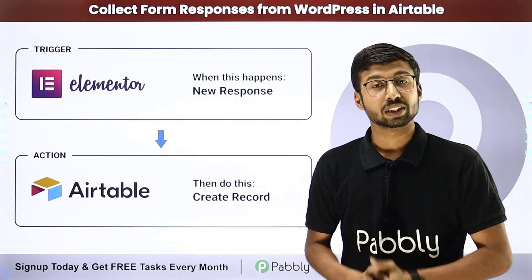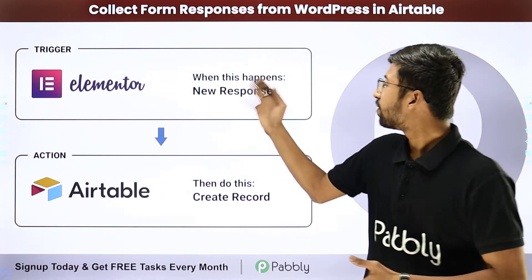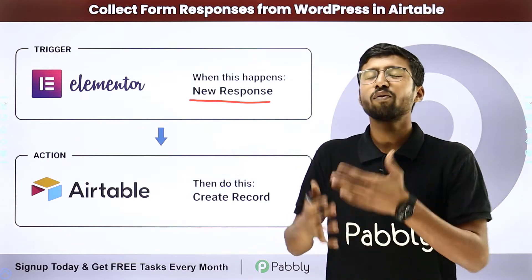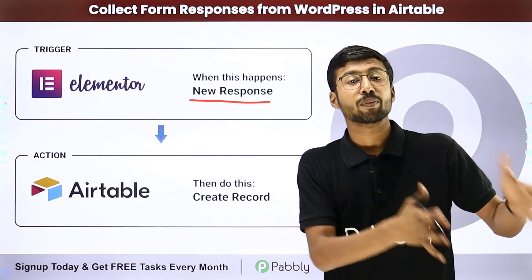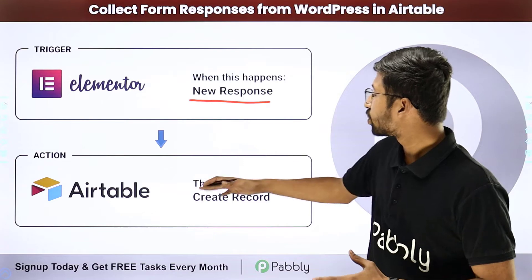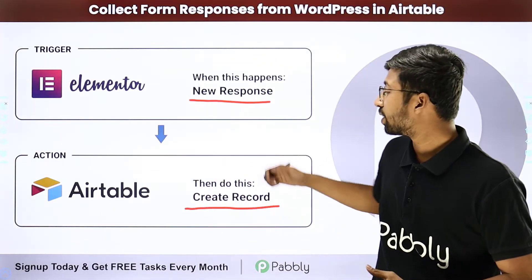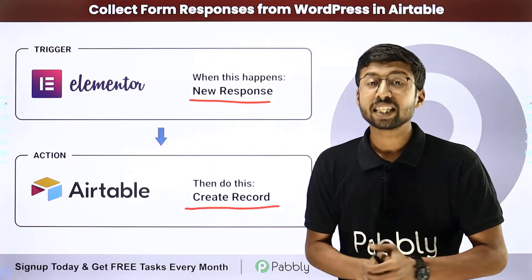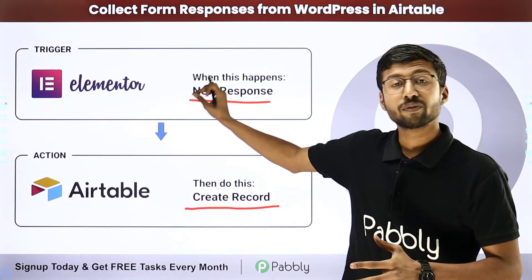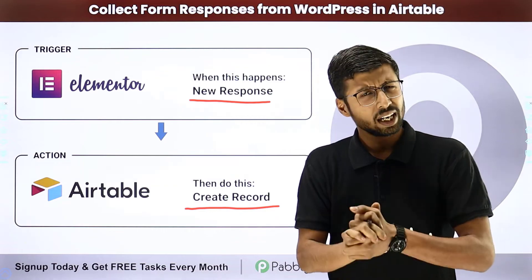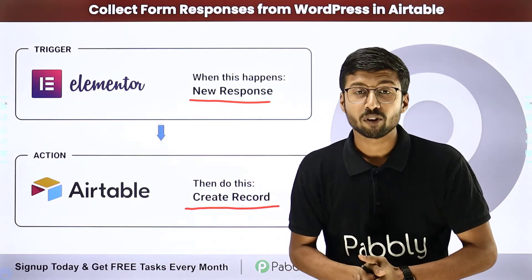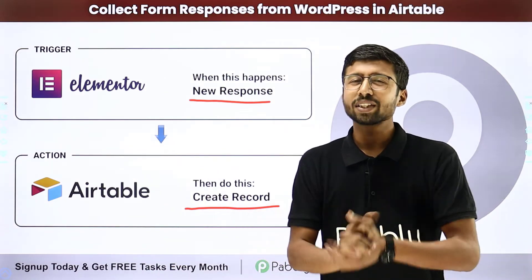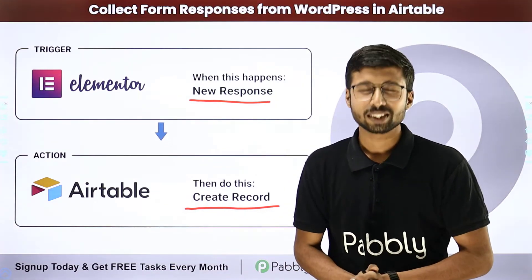You can completely automate this process. Using this automation, first we will be getting a response from our form building application like Elementor, or whatever form building application you are using in your WordPress site. And after that, using Pabbly Connect automation, we are going to add those form submission data into our Airtable and create a new record. In this video, we are taking an example of Elementor forms added in a WordPress site, but you can use any other online form building application.